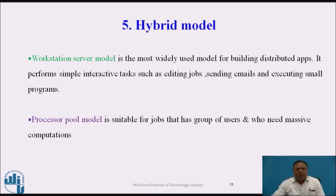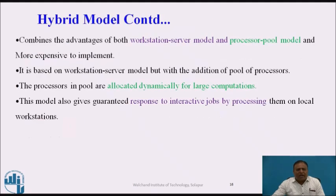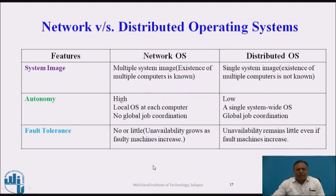The last model is the hybrid model, which is most widely used for building distributed applications. It performs simple interactive tasks such as editing jobs, sending mails, and executing small programs, while the processor pool model handles groups of users needing massive computations. The hybrid model is a combination of the workstation server model and the processor pool model — it is based on the workstation server model with the addition of a pool of processors kept dynamically for large computations. It also gives guaranteed response to interactive jobs by processing them on local workstations.